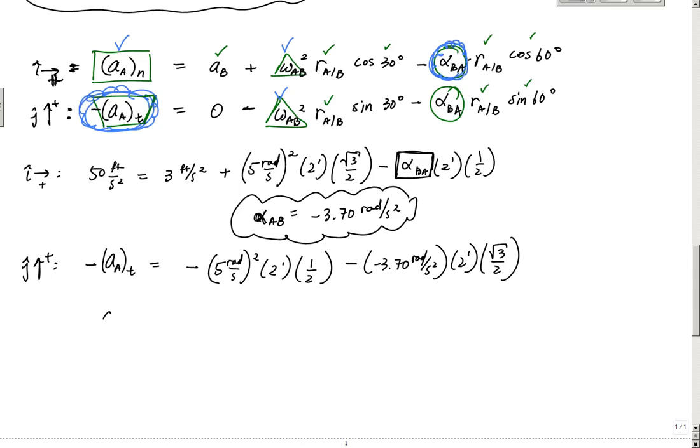And that makes AAT, when I plug and chug and do the numbers, you can check for me, why not, I ain't perfect. This is 18.59 feet per second squared. And the answer is positive.